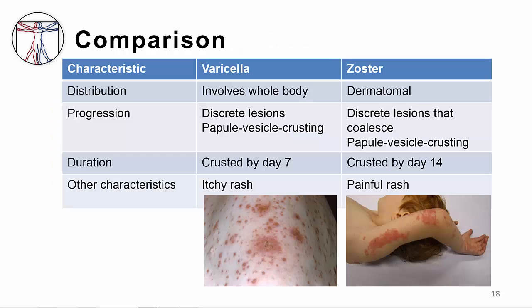This slide compares and contrasts varicella and zoster, the two manifestations of VZV infection. Varicella involves the whole body, is an itchy rash, and has characteristic progression of lesions. In contrast, zoster is in a dermatomal distribution, is painful, has a similar progression of rash, but it lasts longer and the lesions may blend together more.